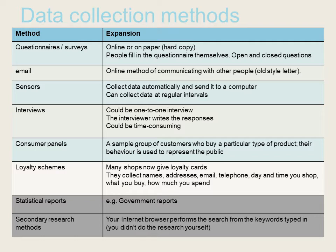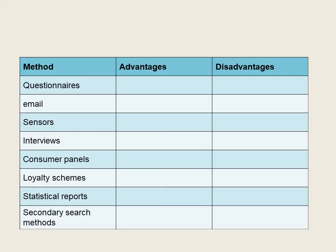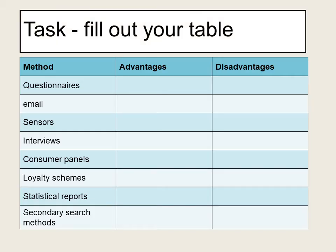There's also secondary research — the internet browser performs a search for you, so you can type in anything and the research is done for you. Let's go back to your table that you've drawn, or you can just write a list. What I'd like you to do now is fill out the advantages and disadvantages of each data collection method — we've written down all the methods down the left hand side and then we're going to write about each one on the right.